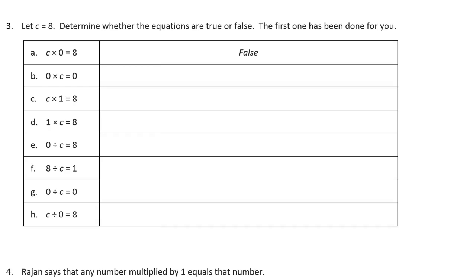C times 0 equals 8. So it says let C equals 8. So we're going to pretend that there's an 8 here. Wherever you see C, just pretend that's an 8. Because it just said let C equal 8. So I'm just going to write it in there to make it easier to look at.